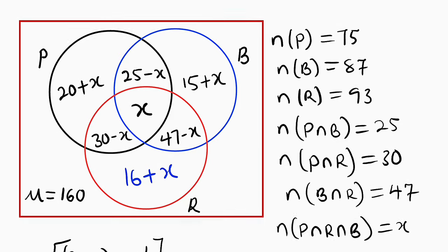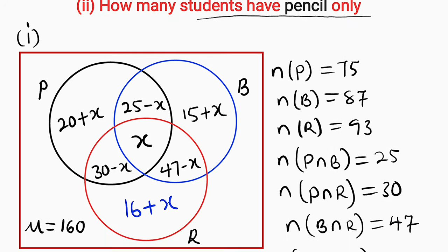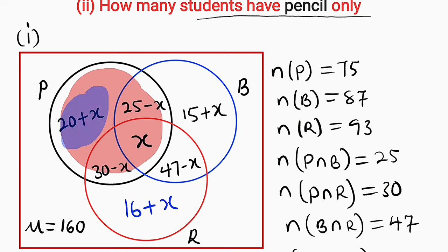We have now answered question 1, which asked us to insert all the information in the Venn diagram. For question 2, we need to find the number of students that have pencil only. Before we can do that, we need to find the value of X and identify the pencil-only region, which is 20 plus X.